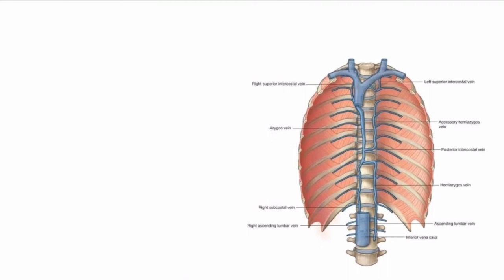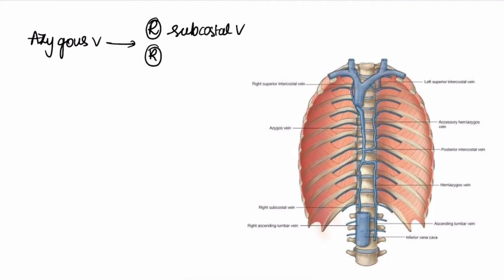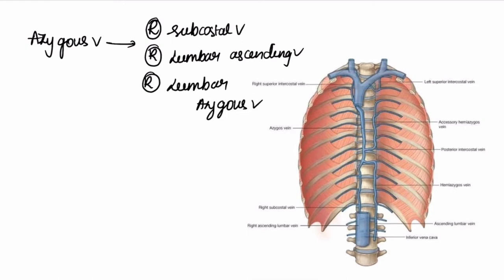Now let us discuss about the formation of the azygous vein. The azygous vein is formed by the right subcostal vein and the right ascending lumbar vein. That's all about the venous system. Now let us discuss about the intercostal nerves.